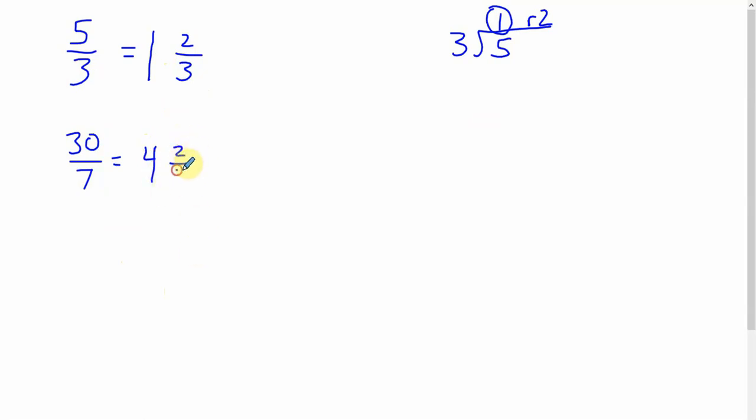So two sevenths, four and two sevenths. Yeah, so four and two sevenths is just another name for 30 sevenths. So that's converting from improper to mixed.